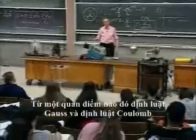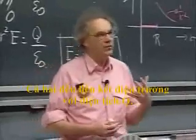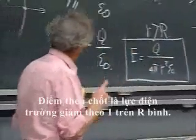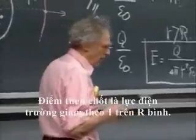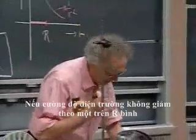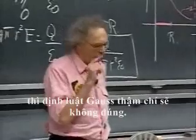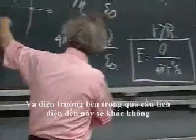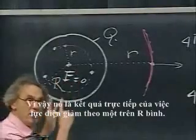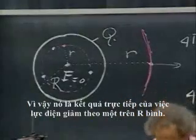Gauss's law and Coulomb's law are in a way the same law — they both link the electric field with the charge Q. The key is the fact that the electric force falls off as one over r squared. If the electric field strength did not fall off as one over r squared, Gauss's law would not even hold, and the electric field inside this uniformly charged sphere would not be zero. It is the immediate consequence of the fact that electric forces fall off as one over r squared.